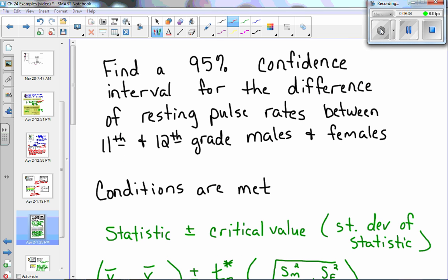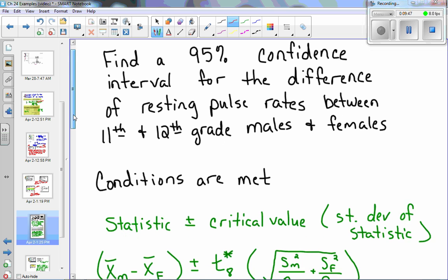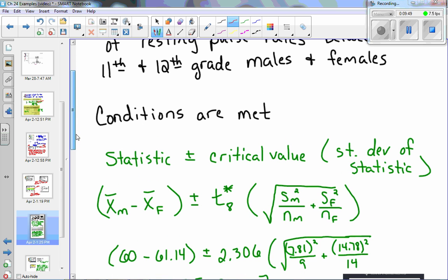Now let's look at a confidence interval. We're going to find a 95% confidence interval for the difference of resting pulse rates between 11th and 12th grade males and females. Now the conditions are the same, so they're already met. From your yellow sheet, to find our confidence interval, we take the statistic plus or minus the critical value times the standard deviation of the statistic.